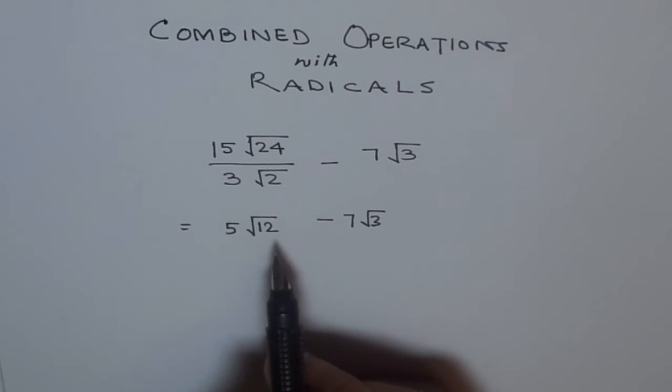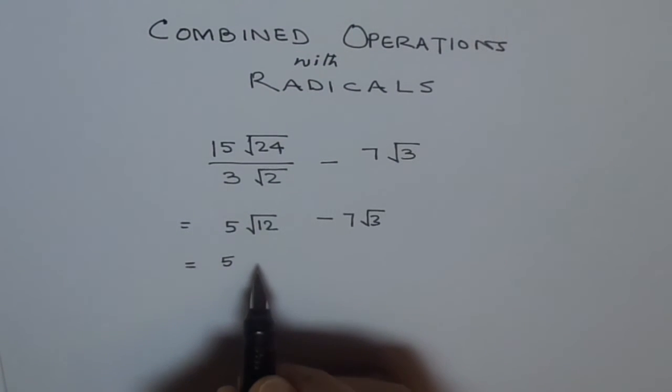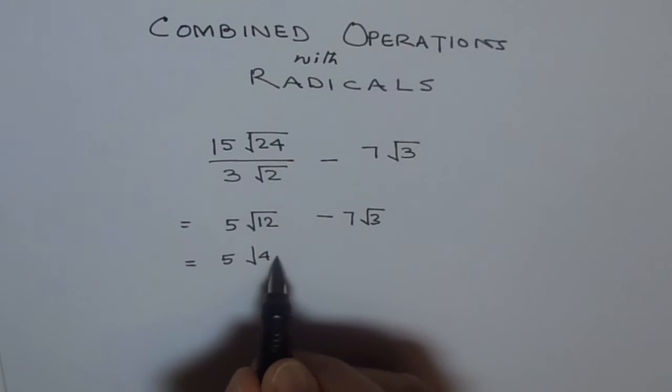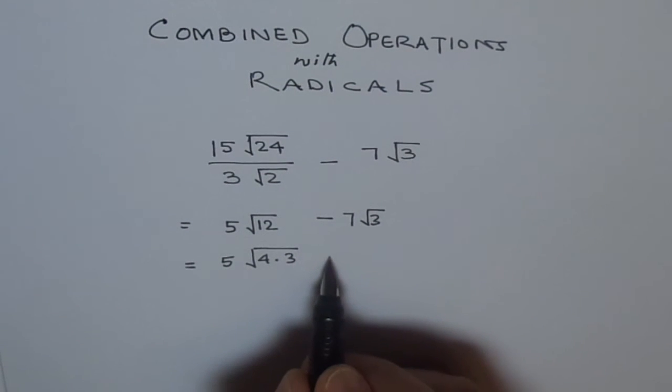Now fortunately for us we can break down square root 12 or radical 12 as it has a factor which is a perfect square. So let's do that. So we get 5 and 12 can be written as 4 times 3, where 4 is a perfect square of 2.